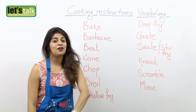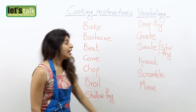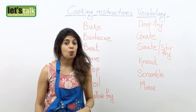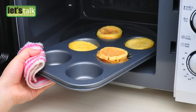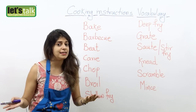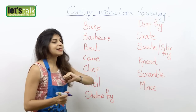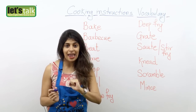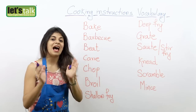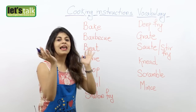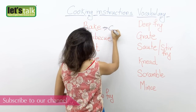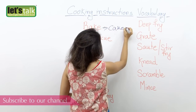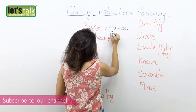The first one is bake. Bake means when we put our food in the oven and cook it on heat — such as cakes, casserole, or even bread. So we say I am gonna bake a cake, meaning I am gonna put the food in the oven and cook it on heat. You bake cakes or even bread.